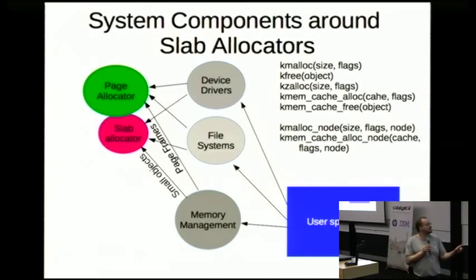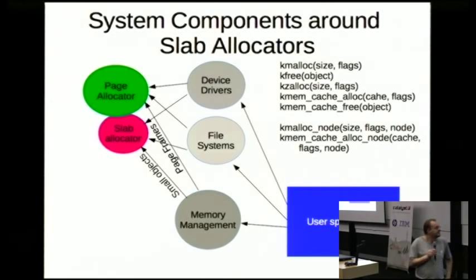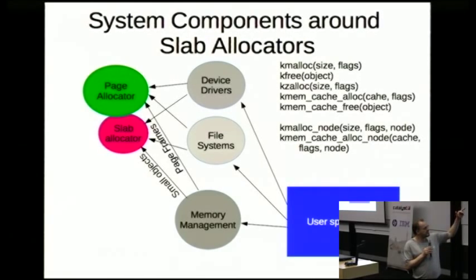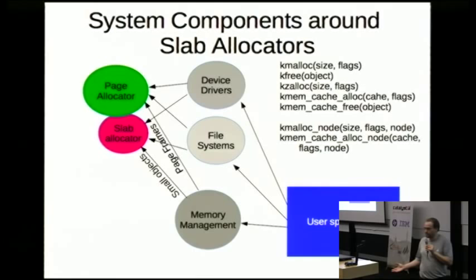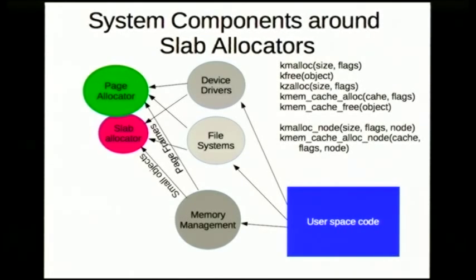The kmalloc call tells the system you want a memory block of a given size. kzalloc does the same but zeros the data — zeroing costs time and touches cache lines, so only use it if necessary. You can also create special memory caches with custom attributes: you can tell the slab allocator you want data aligned to certain boundaries or ready for I/O, using km_cache_alloc and specifying the cache. The slab allocators are also NUMA-aware so you can request memory for a specific node for performance reasons.